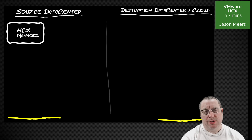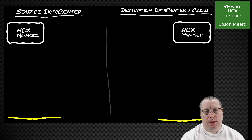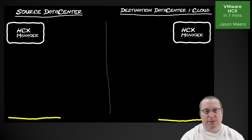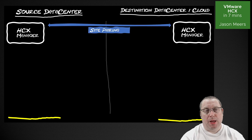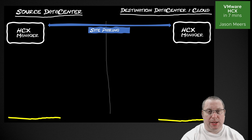The first thing we're going to do is deploy the HCX Manager at the source data center, which is an OVA appliance. We're then going to deploy another HCX Manager at the other data center, or if we're moving stuff to the cloud, the cloud provider will have already done this for us. We need two HCX Managers, one at either side. The next thing we do is site pairing, where we tell each HCX Manager about the other, so that we've now got a connection between the two sides. That's the first step in doing HCX.